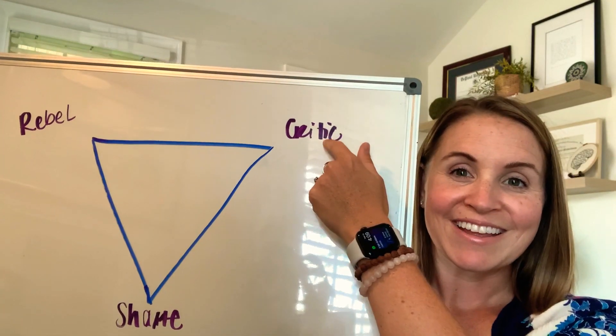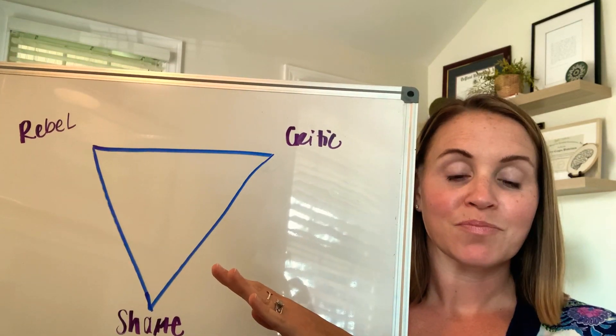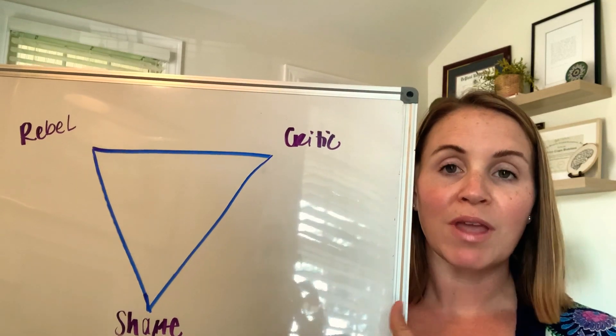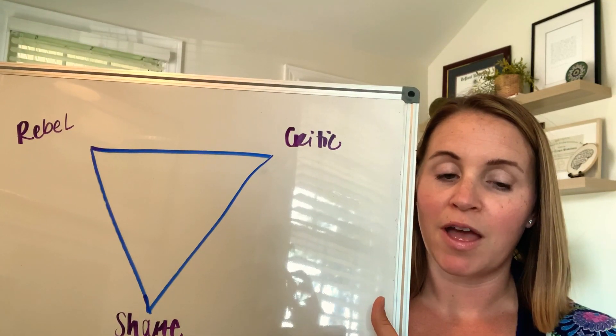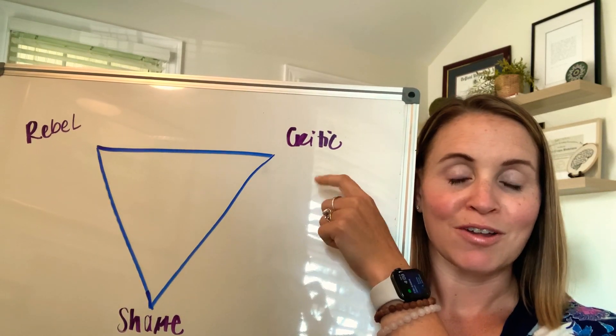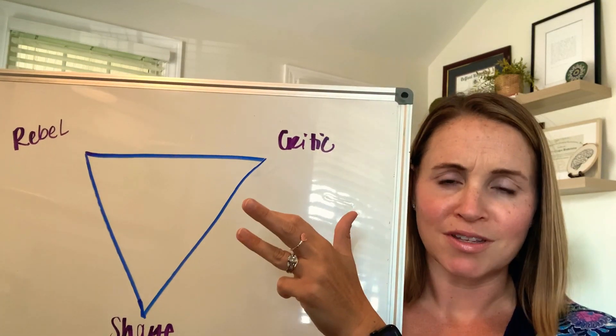And the critic is really good at keeping that stuff buried. Because the critic then manages our external representation of ourselves. So if we have the storyline of, I'm a failure, well, the critic's going to make sure that we are very ambitious, high achieving, super competitive, a perfectionist.